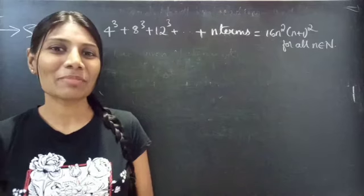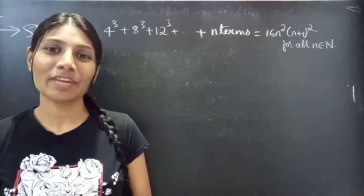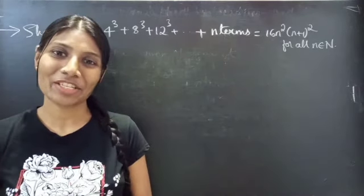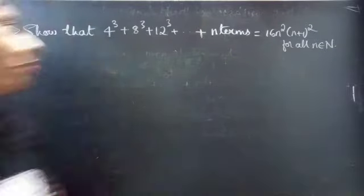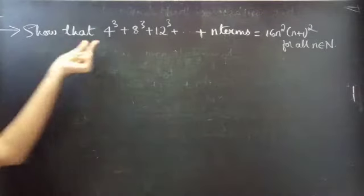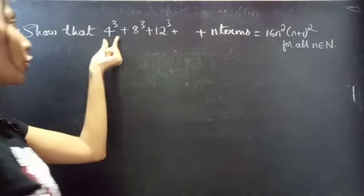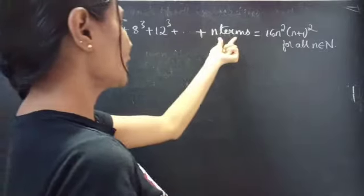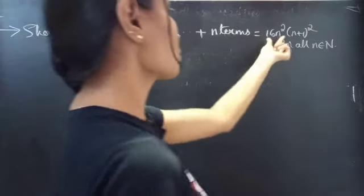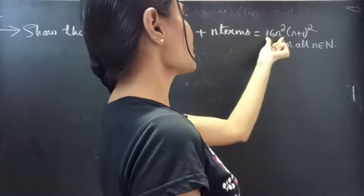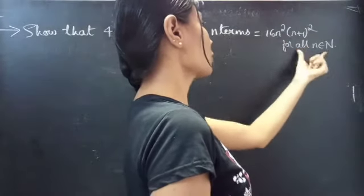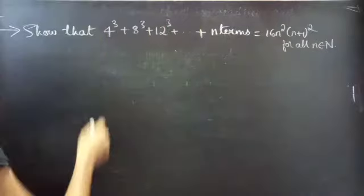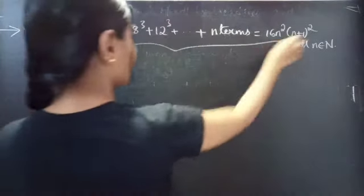Hello everyone, this is Karpana here. In this video we are going to solve a problem from mathematical induction. So let's get started. The problem: show that 4³ + 8³ + 12³ + ... up to n terms equals 16n²(n+1)² for all n belonging to the natural numbers. This is the given statement.